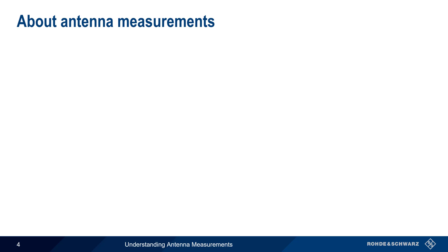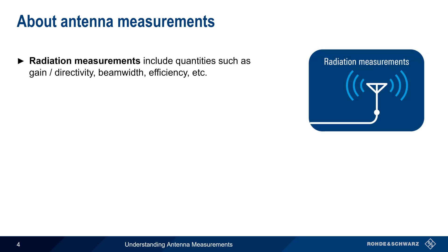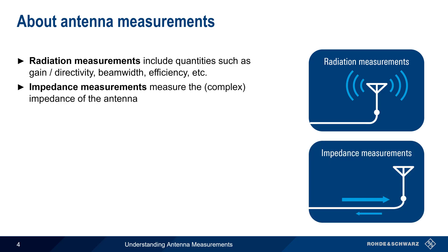There are actually two types of antenna measurements. One type of measurement is radiation measurements, which quantify how well the antenna radiates a signal. This includes the antenna's gain and directivity, beam width efficiency, etc. However, in this presentation, we'll be looking at the other type, which is antenna impedance measurements.